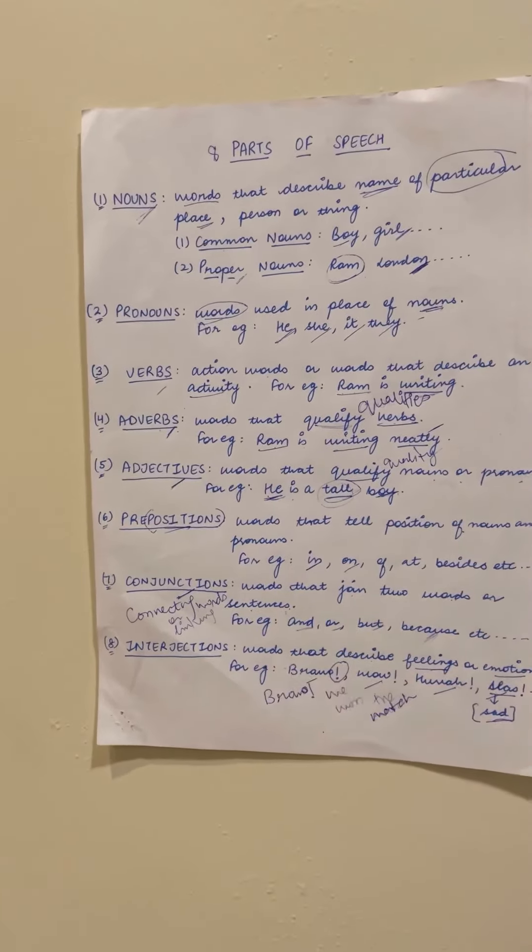Next है हमारे पास conjunctions। इनको हम connecting words या linking words भी बोलते हैं। Conjunctions क्या होती है? Words that join two words or sentences। जो words दो words या फिर दो sentences को join करें, उन्हें हम conjunctions बोलते हैं। For example: and, or, but, because, neither, nor। जैसे: 'Ram is going to market' और 'Sham is going to market' — इनको इकट्ठे बोलें तो 'Ram and Sham both are going to market.' तो and हमारा क्या हो गया? Conjunction।